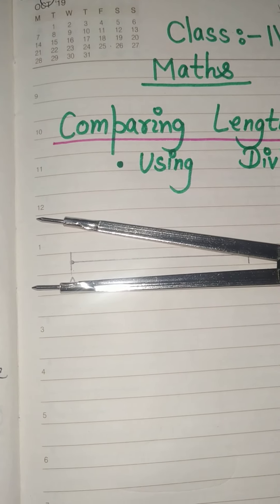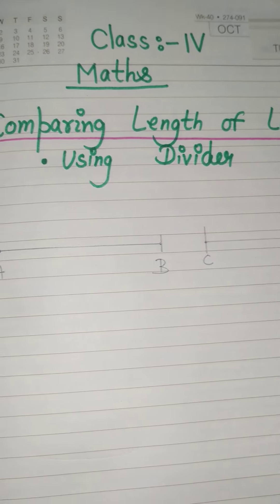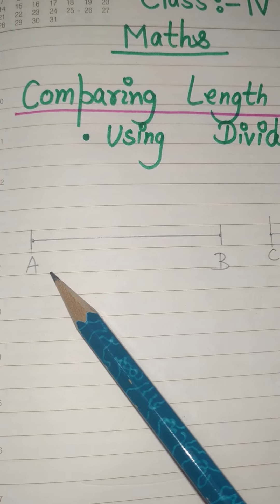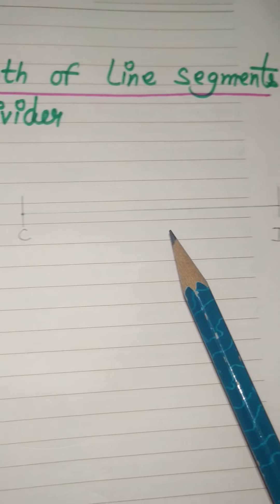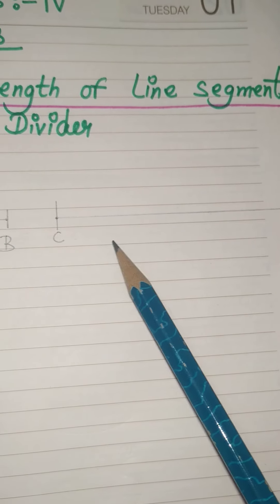Now how will you compare the length of different line segments? So here we have two line segments, first is AB and another one is CD. So here you have to tell which one is smaller and which one is greater with the help of this divider.